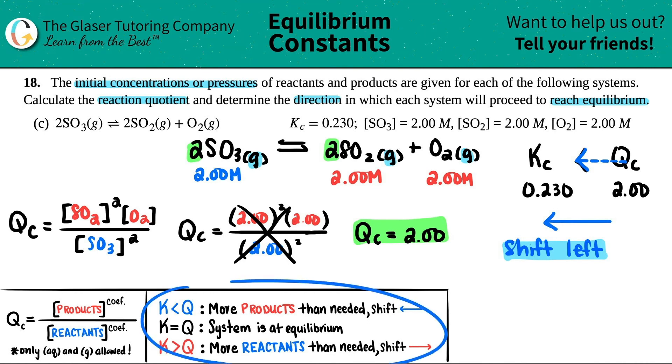I also wrote down what these mean for wording so that you can write this down if you want to. But we're right here. Just like we said before, if the K is less than the Q, you have way more products than you need. So, get rid of them. Go to the other side. And there you go.